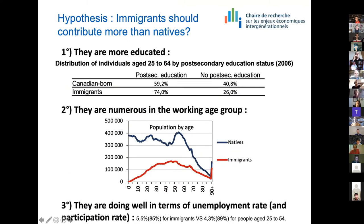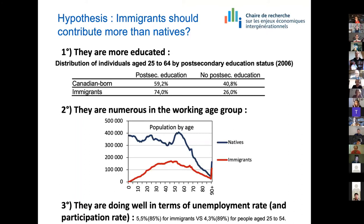Our first idea was that immigrants should contribute more than natives because in Canada, they are more educated — 74% of immigrants have post-secondary education compared to 59% for Canadian-born. As in every country, immigrants are particularly represented in the working-age group and they do pretty well in terms of unemployment and participation rates in comparison with other developed countries. So we thought they might have a positive impact on the public transfer system.